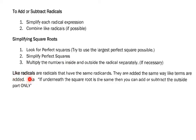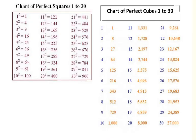Like radicals are similar to like terms — they have the exact same variables outside and the exact same numbers and variables on the inside. You add or subtract just the outside numbers, and the radical part carries through. This works for square roots, cube roots, fourth roots — any index. It's also handy to have a chart of perfect square and perfect cube numbers; I'd recommend memorizing perfect squares 1 through 15 and perfect cubes 1 through 10.